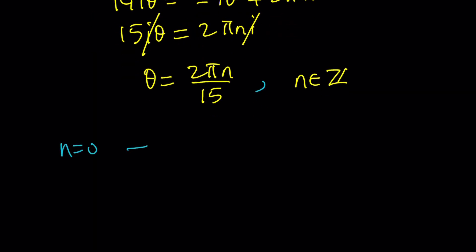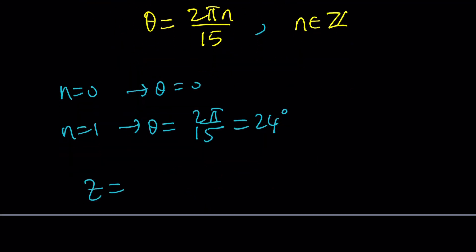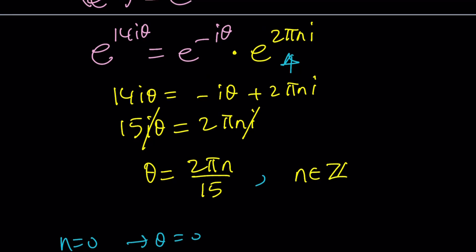Now if N is 0, theta is 0. If N is 1, then theta is going to be 2 pi over 15, which is 24 degrees. 180 divided by 15 is 12. That's going to be 24 degrees. So, what is the answer? E to the I theta. So Z is going to be E to the I times 2 pi over 15. Or, you can write this as cosine of 2 pi over 15 plus I times sine 2 pi over 15. Or, you can replace it with 24 degrees if you like that better. You get the idea?